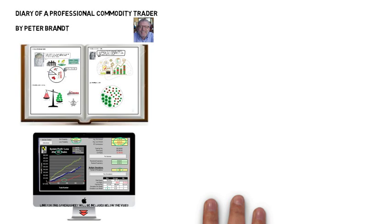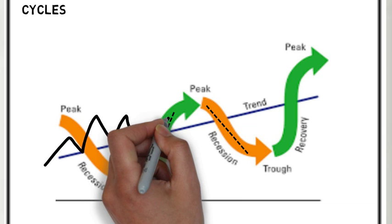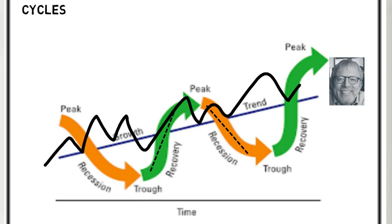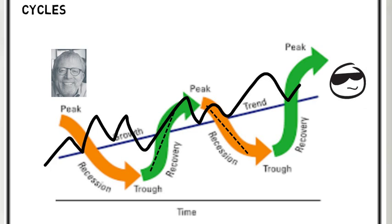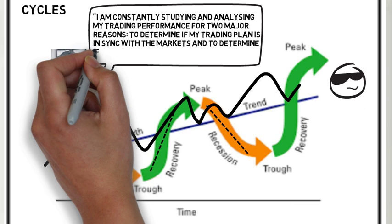Peter's understanding of his strategy gives him the ability to continually execute through any market environment. Strategies work in cycles as does the market. They go through periods of major gains whilst also experiencing periods of drawdown. The idea is to remain disciplined and execute according to your strategy through these periods. If the strategy has a definitive edge, the net result in the long run should be positive or, in Peter's account, very positive. Peter says I am constantly studying and analyzing my trading performance for two major reasons: to determine if my trading plan is in sync with the markets, and to determine if I am in sync with my trading plan.